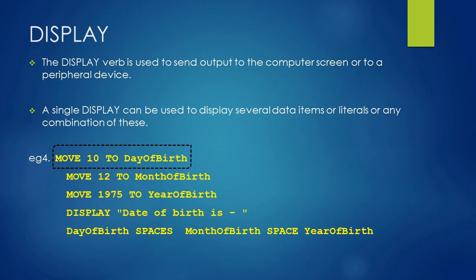Now, in the fourth example, we are moving 10 to the day of birthday variable, 12 to the month of birthday variable, 1975 to the year of birth variable.